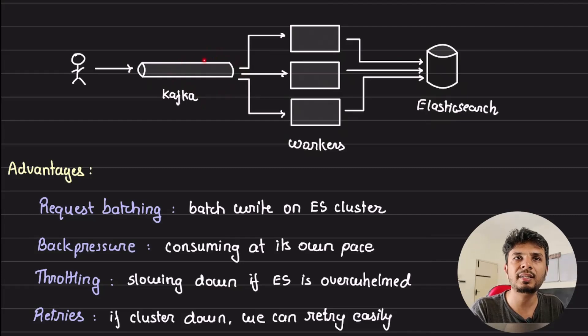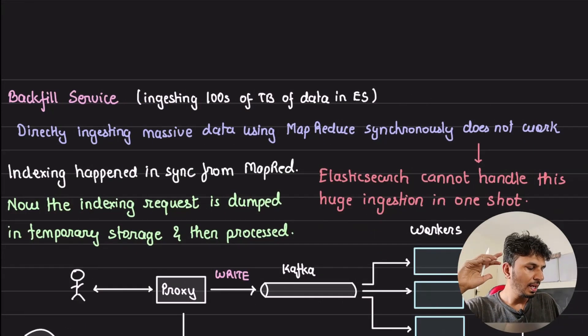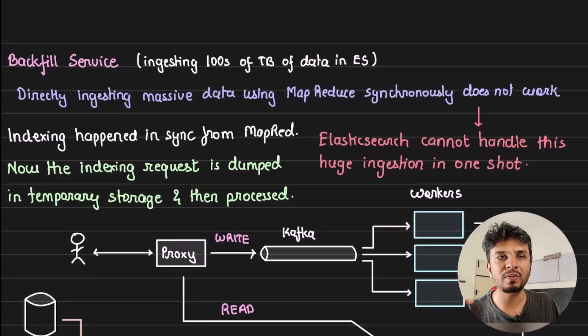Then retries. In case there is a failure, in case Elasticsearch is down for any reason, the write request, the ingestion is basically queued up in this Kafka and again later be consumed to be put into Elasticsearch. So you get resiliency just by adding this one more layer of Kafka in between. It ensures that we are streamlining our consumption and ingestion into Elasticsearch.